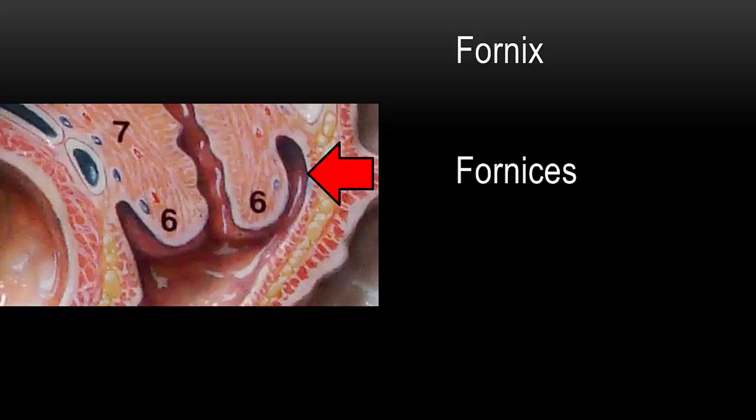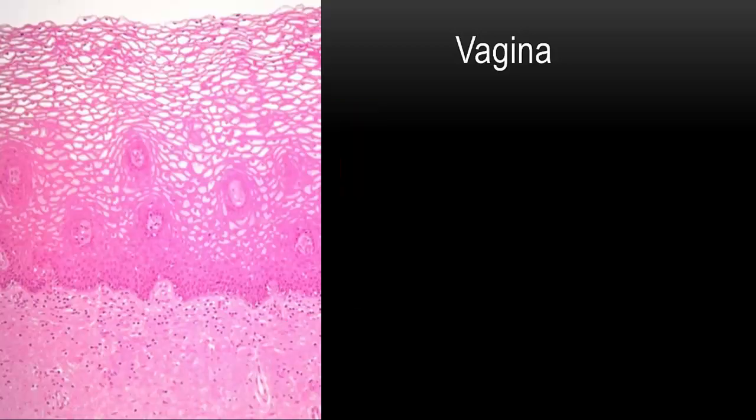Let's take a look at the histology of the vagina, shown in this slide. You can see that the vagina has stratified squamous epithelium, the same type of tissue found in the skin and in the esophagus. Can you think of why that would be?